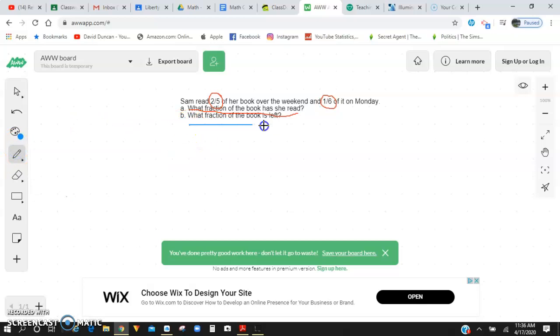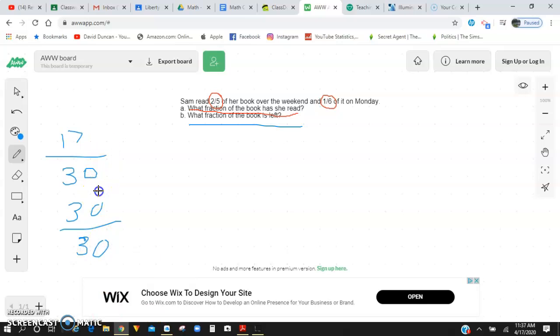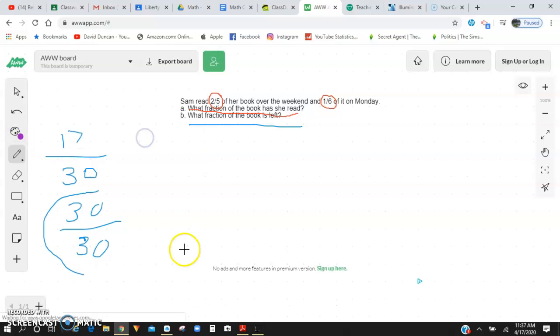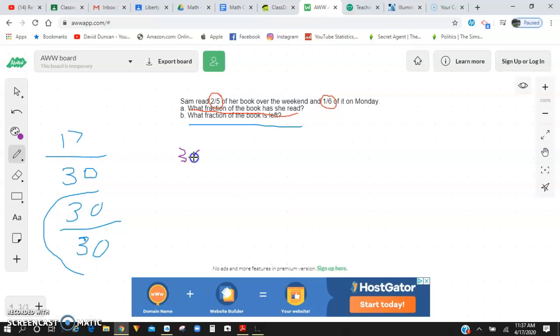Well, I know that she had 17 30ths read. And I know the whole book is 30 30ths. That would be 30 30ths. That is the whole book. One whole, 30 30ths. And I have 17 30ths read. So I need to subtract those two to figure out how much she has left. So I'm going to take 30 30ths and I'm going to subtract what she's read, which is 17 30ths. And I'm going to identify how much she has left.